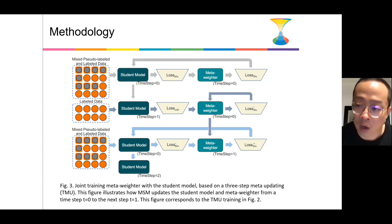In the second step, we only input the golden data to student model and meta-weighter. With the golden data and the updated student model, we can update the meta-weighter in this time step, time step 2. The goal of this step is to update the meta-weighter without the influence from the noised pseudo-labeled data.